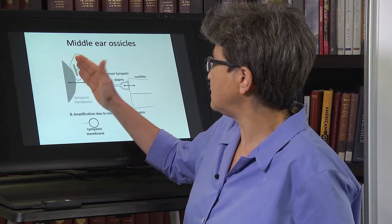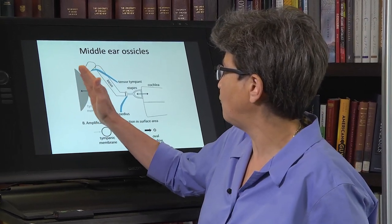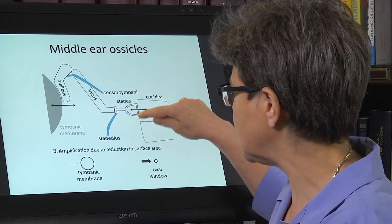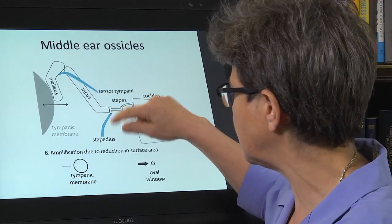And so as this tympanic membrane moves back and forth, it moves the malleus, which moves the incus, which moves the stapes. And each one of these is connected to the next.